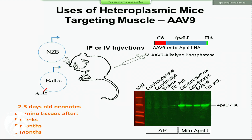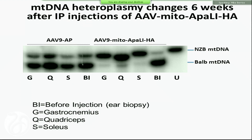We did lots of experiments in cells and in mice. This is the work of Sandra Bachman and Sean Williams in the lab. We put the gene coding for this protein in a virus and injected these mice, so all the muscles received this virus. If you compare the mice before and after injection across different muscle types, you see that before there was a lot of BALB mitochondrial DNA, but after the injection and six weeks later, the mitochondrial DNA is mostly the NZB type. Exactly what we expected.